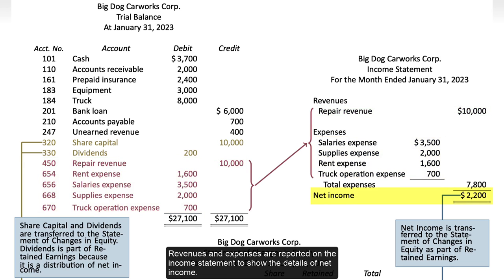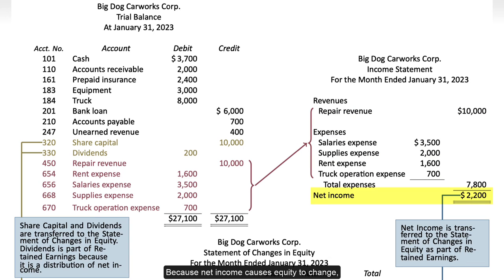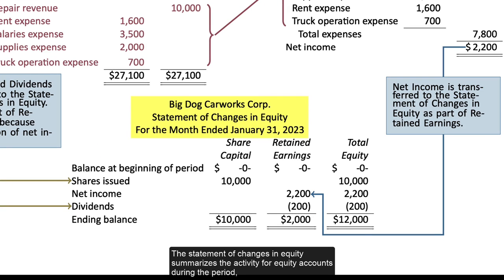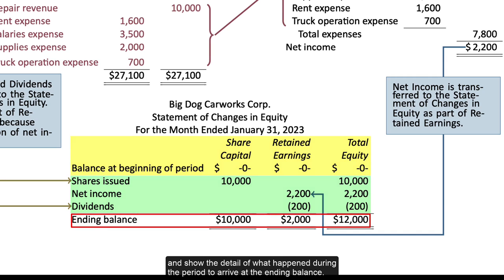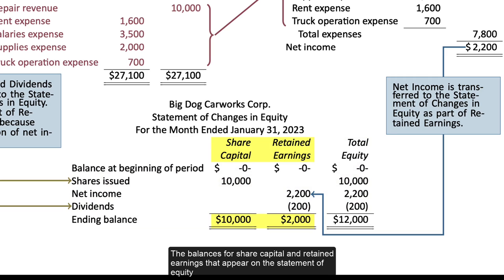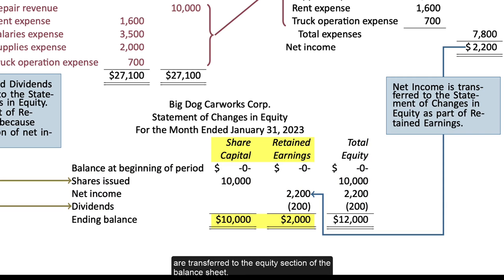Revenues and expenses are reported on the income statement to show the details of net income. Because net income causes equity to change, it's then reported on the next statement, which is the statement of changes in equity. The statement of changes in equity summarizes the activity for equity accounts during the period, beginning with the opening balances at the beginning of the period, and shows the detail of what happened during the period to arrive at the ending balance.